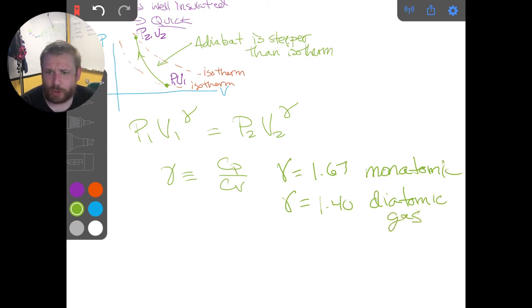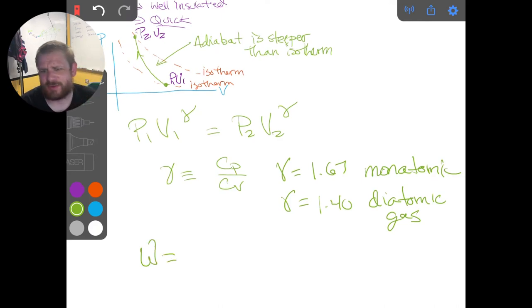And the work done in an adiabatic process is equal to, well, we have some P final V final minus P initial V initial divided by 1 over gamma. That will give you the work.